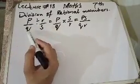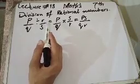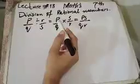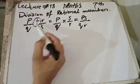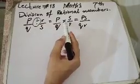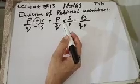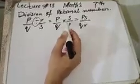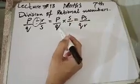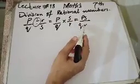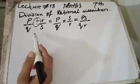हम देखते हैं कि P over Q और R over S ये दो rational numbers के लिए abbreviation use होते हैं। Division को हम हमेशा multiplication में change कर देते हैं। P over Q multiply by S over R is equal to P को S से multiply करके और Q को R से, तो हमारे पास equation आजाएगी PS over QR. This is the division of the rational number.